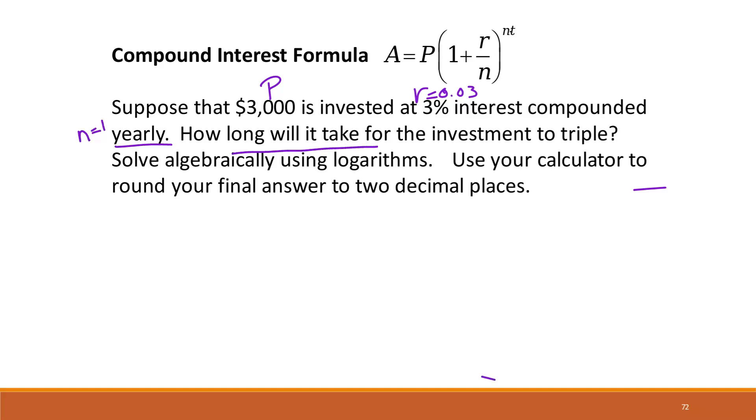How long will it take, so we're being asked about a time for the investment to triple. So if we want it to triple, our A is going to be 3 times 3,000, which is 9,000.